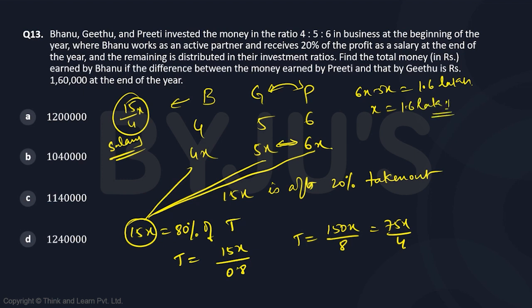What are they saying? They are saying find the total money earned by Bhanu. So how much did Bhanu get? Bhanu gets 4x and 15x by 4. That is the total amount.